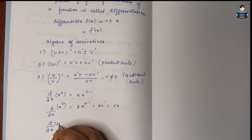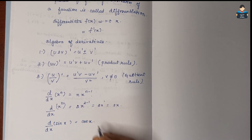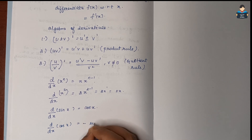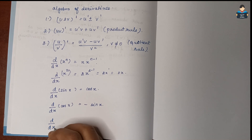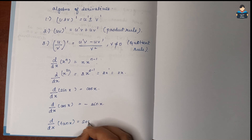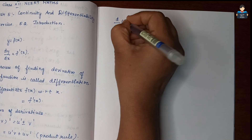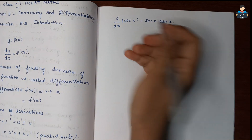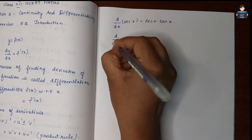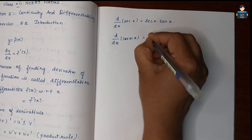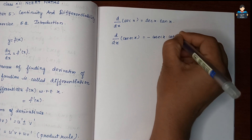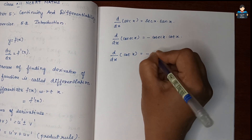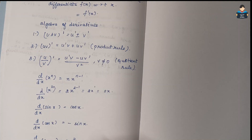Differentiation of sin x is cos x. Differentiation of cos x is minus sin x. Differentiation of tan x is sec squared x. Differentiation of sec x is sec x times tan x. Differentiation of cosec x is minus cosec x times cot x. Differentiation of cot x is minus cosec squared x.